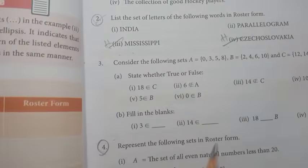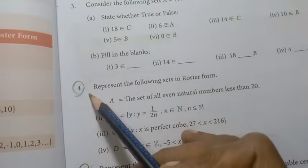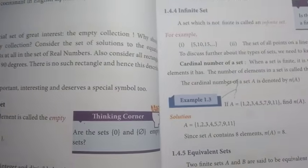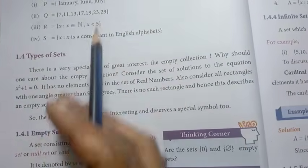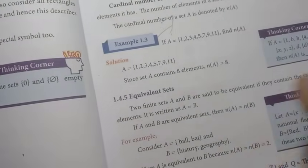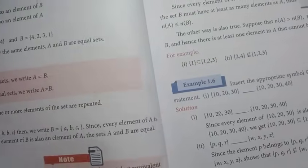In Exercise 1.1: the 2nd and 4th questions are important, then the 5th question is important, then the 6th one is important. Add page number 7. Example 1.3 — this is an important question.